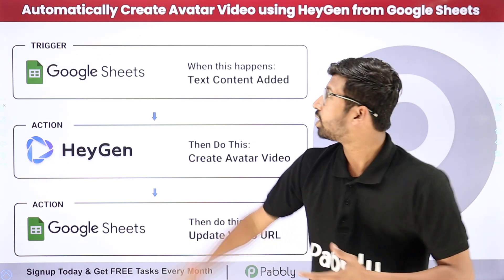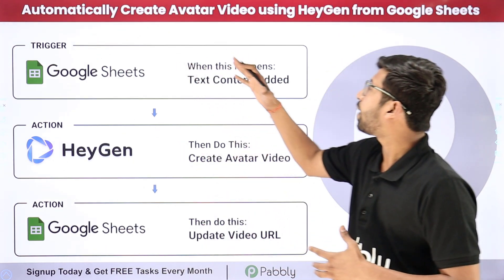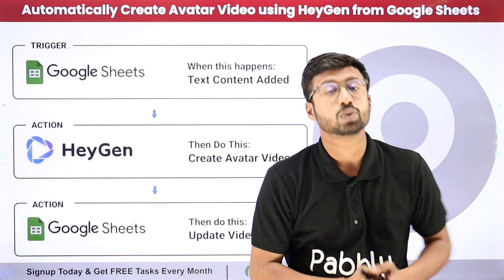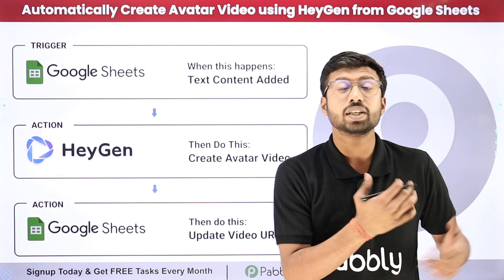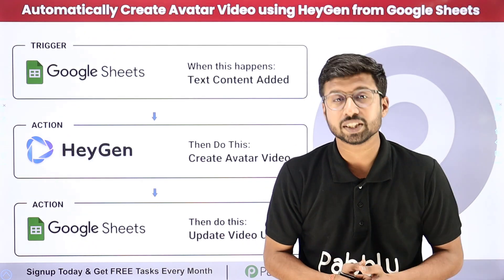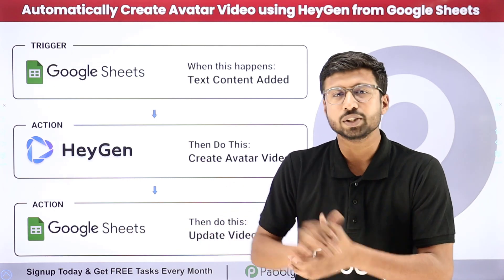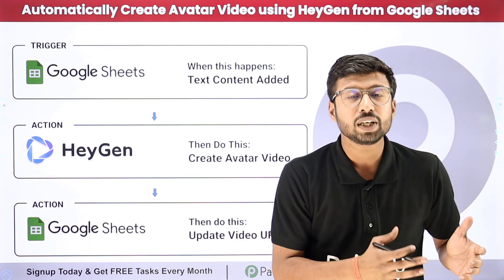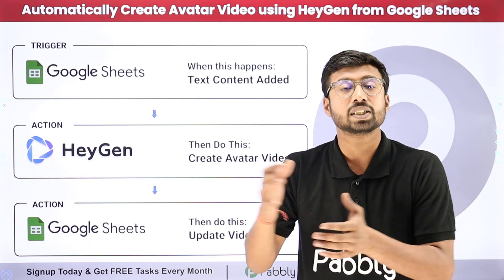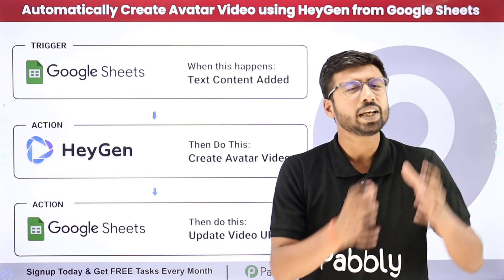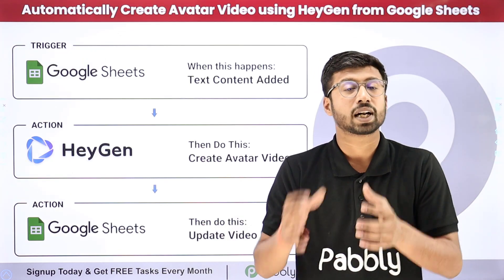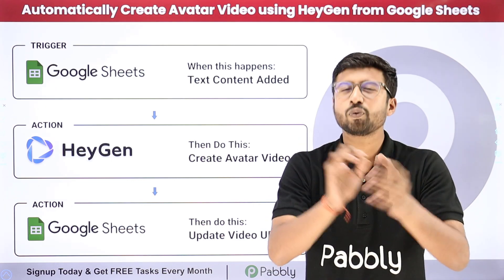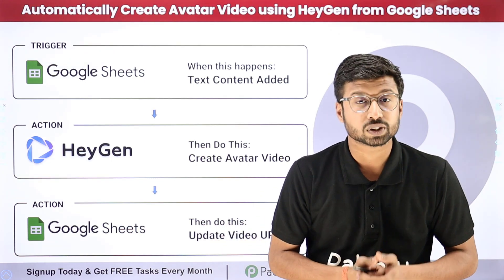In this video, we are going to learn how to automatically create avatar videos using HeyGen from Google Sheets. Let's say I own a digital marketing agency and whenever we onboard a new client, to personalize their onboarding experience, we create a video message and send it to them. But creating a video for a client can be tedious and time-consuming, so we have completely automated this process.